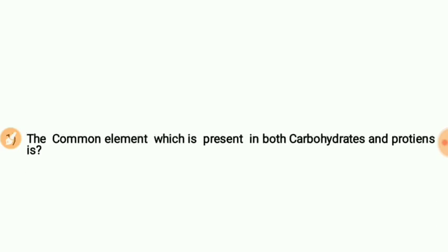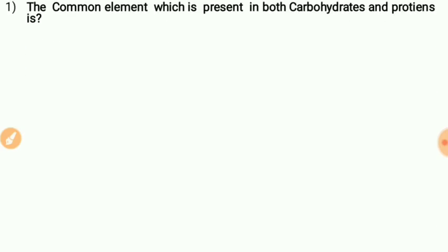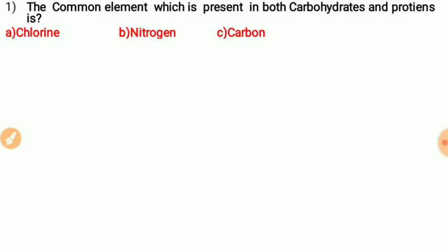Question number one: What is the common element present in carbohydrates and proteins? The options are chlorine, nitrogen, or carbon. The answer is carbon — carbon is the common element present in both carbohydrates and proteins.